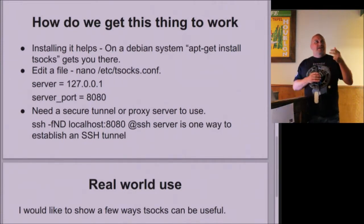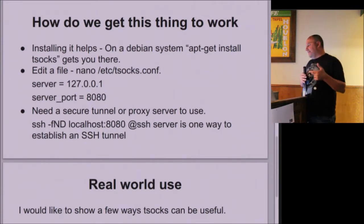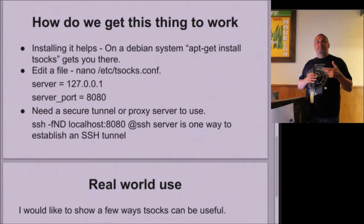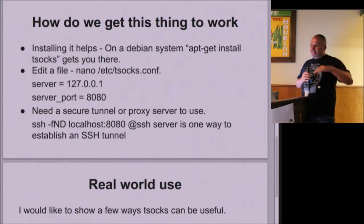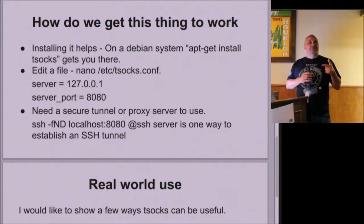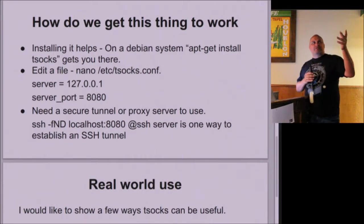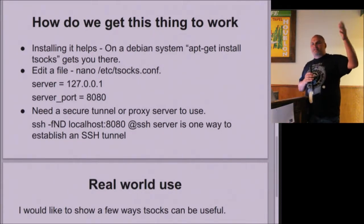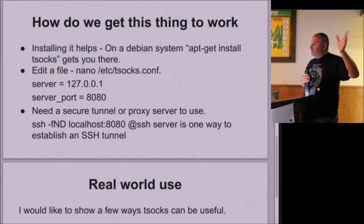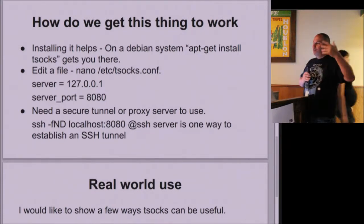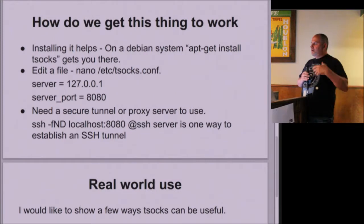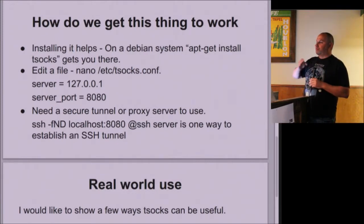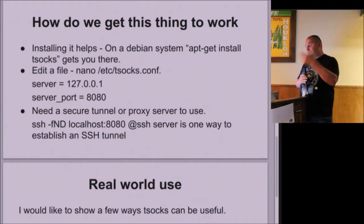After you install it, you need to edit a file called tsocks.config and add some options. The two things you really need to worry about are the server, which is your proxy host, and the server port you're going to use. You can use any port — 1000, 50000 — whatever your proxy server is using to send connections out.